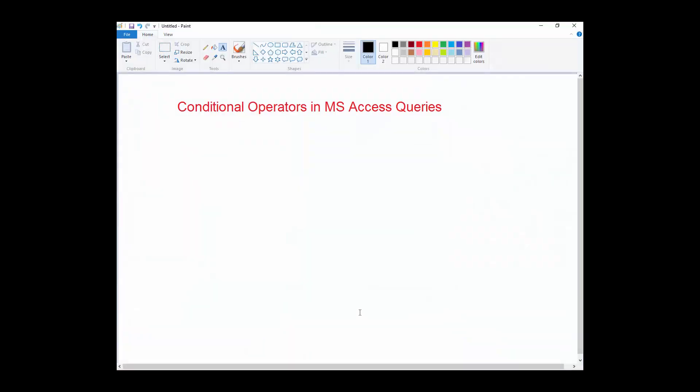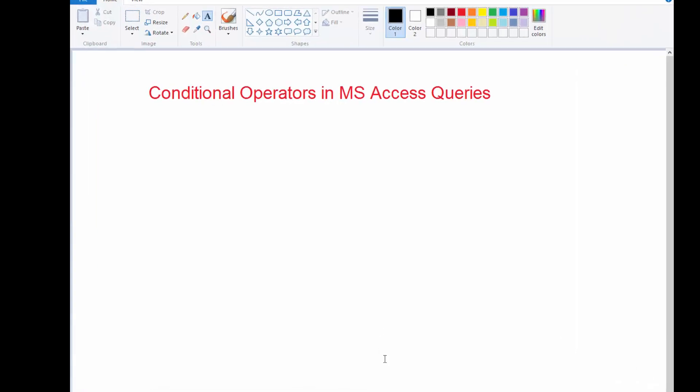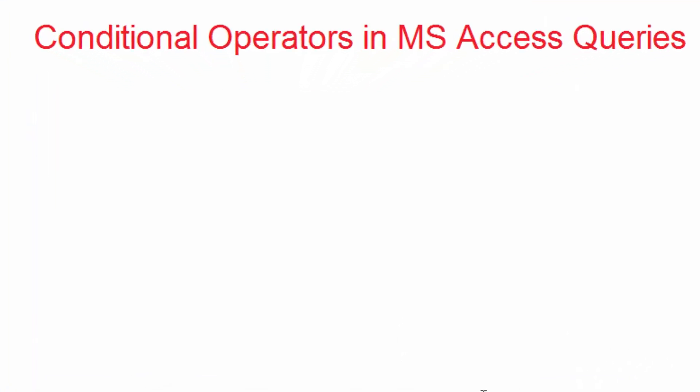Hello and welcome to another ICT lesson. Today we want to look at conditional operators in MS Access queries. These operators are used when you want to choose a certain type of data while you don't want to show a certain type of data.